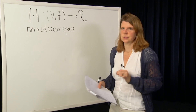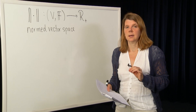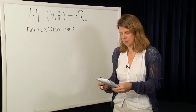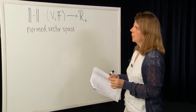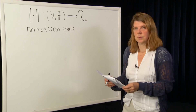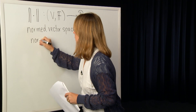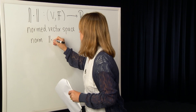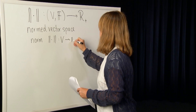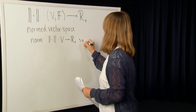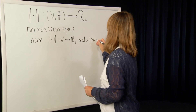Now the definition of a norm is quite general, yet quite specific. It is a map, and it has to satisfy certain given properties. A norm, which maps V to R-plus, satisfies the following properties.